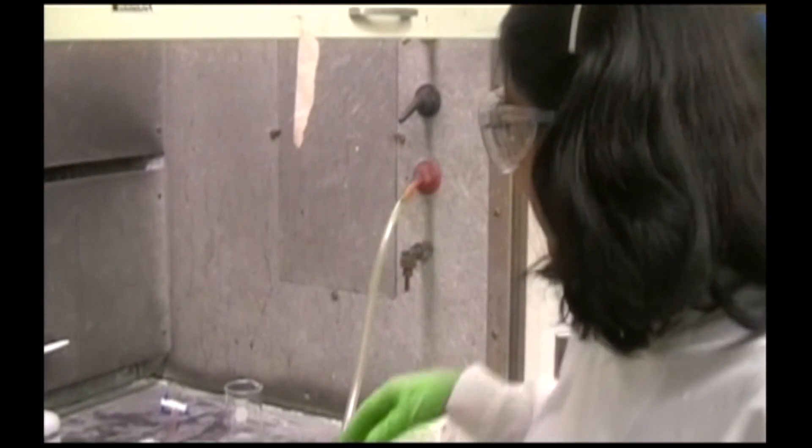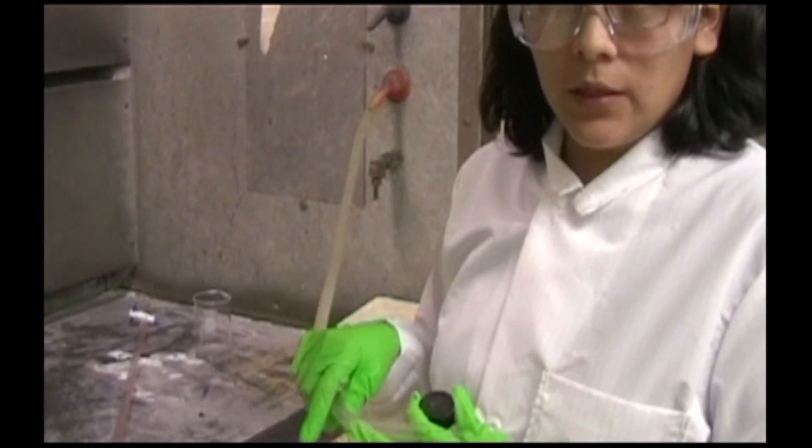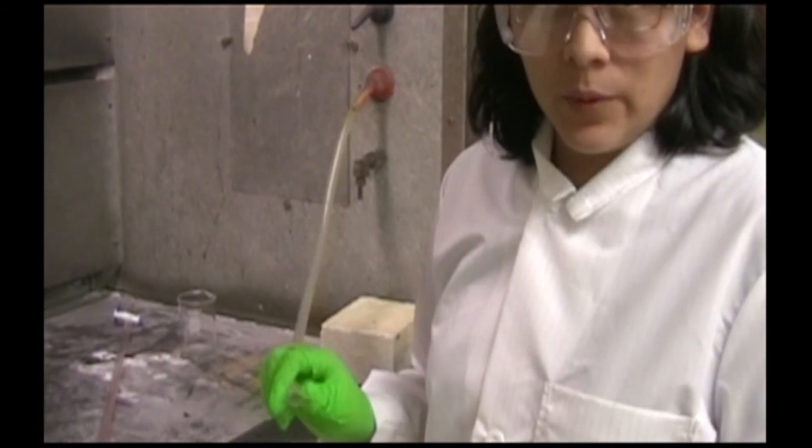To dry off your wet sample, you can use the house air if the sample surface doesn't need to be pristine because the house air is a little bit wet and dirty.